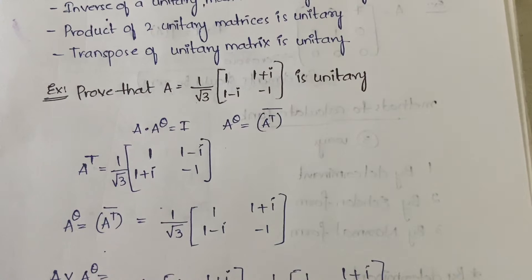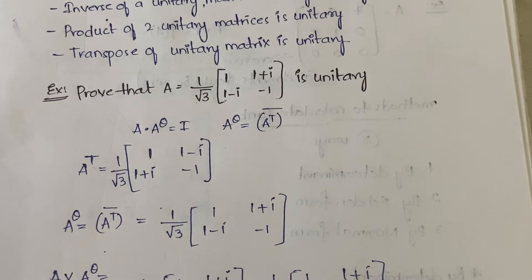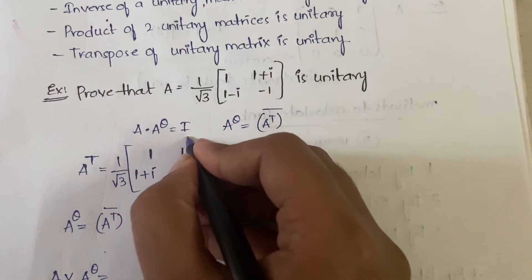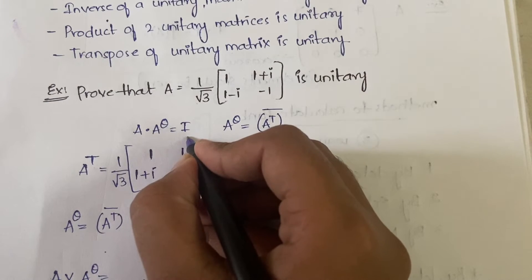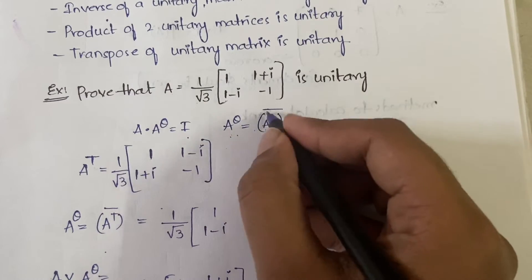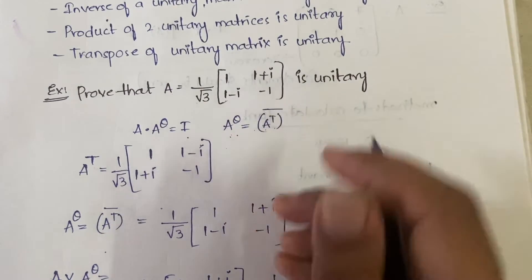Now let's see an example problem. We have to prove that the matrix A = (1/√3) · [[1, 1−i], [1+i, −1]] is a unitary matrix. To prove this, we need to show that A·Aθ = I, since Aθ is the transpose conjugate of A.